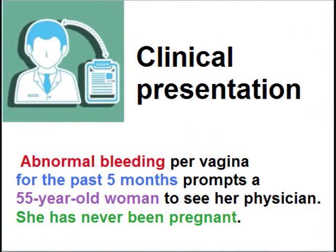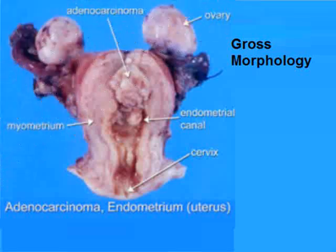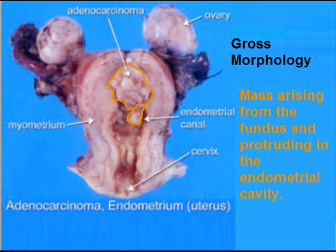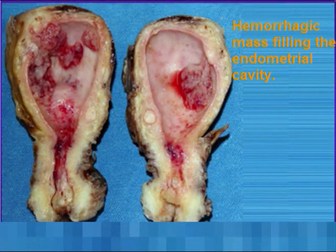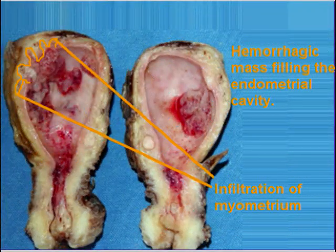Regarding clinical presentation: abnormal bleeding per vagina for the past five months prompted a 55-year-old woman to see her physician. She has never been pregnant. The hysterectomy specimen shows a mass arising from the fundus projecting into the endometrial cavity. Another specimen shows a hemorrhagic mass filling the endometrial cavity and infiltrating the wall of the uterus, or myometrium.